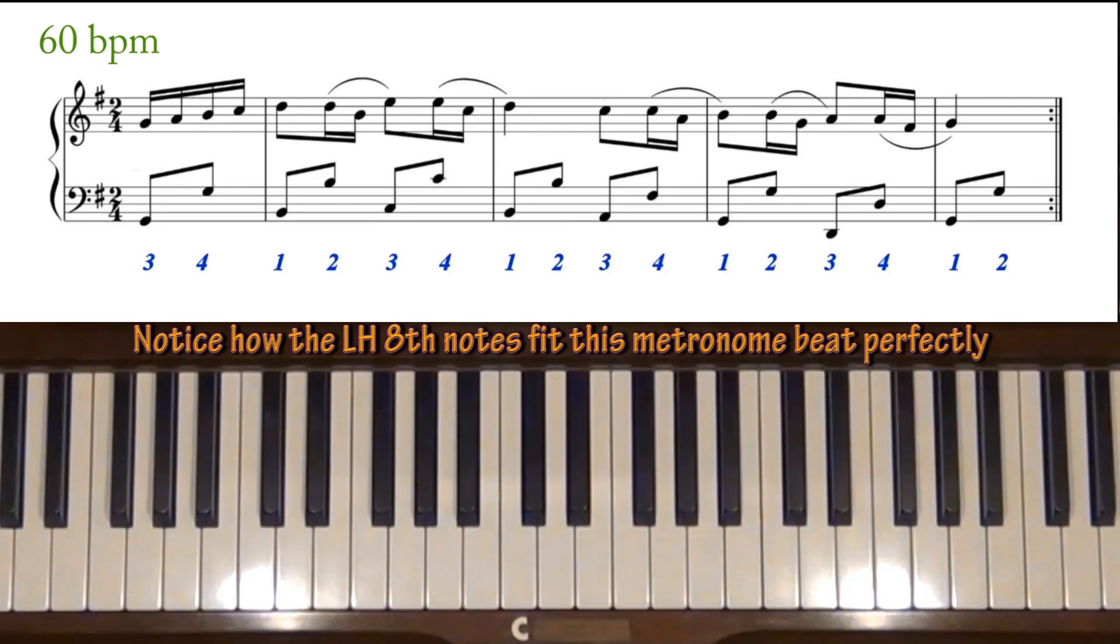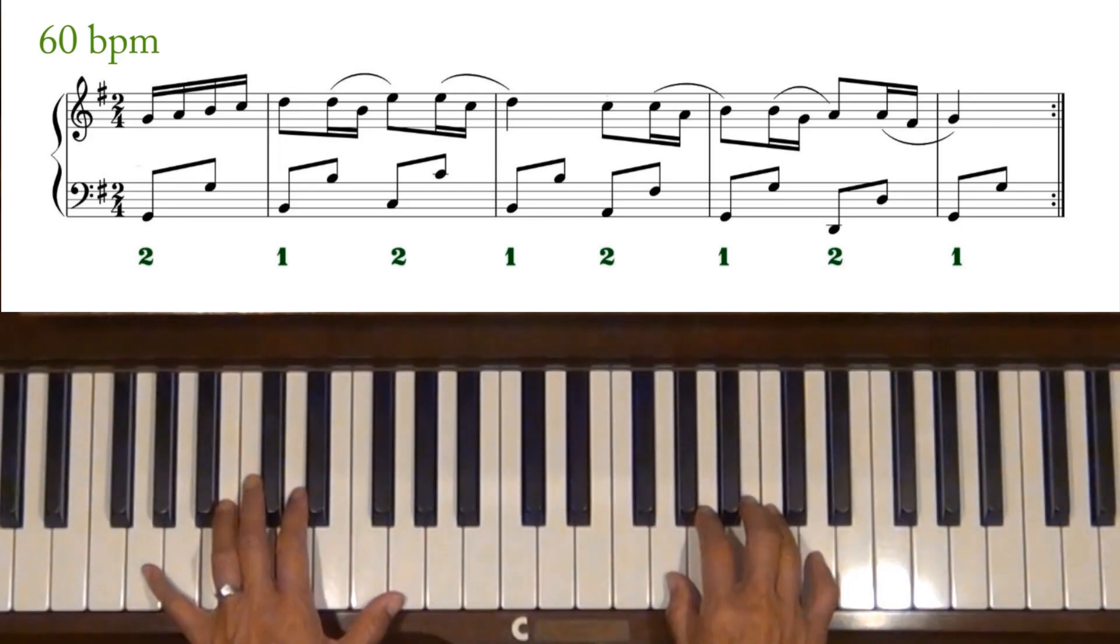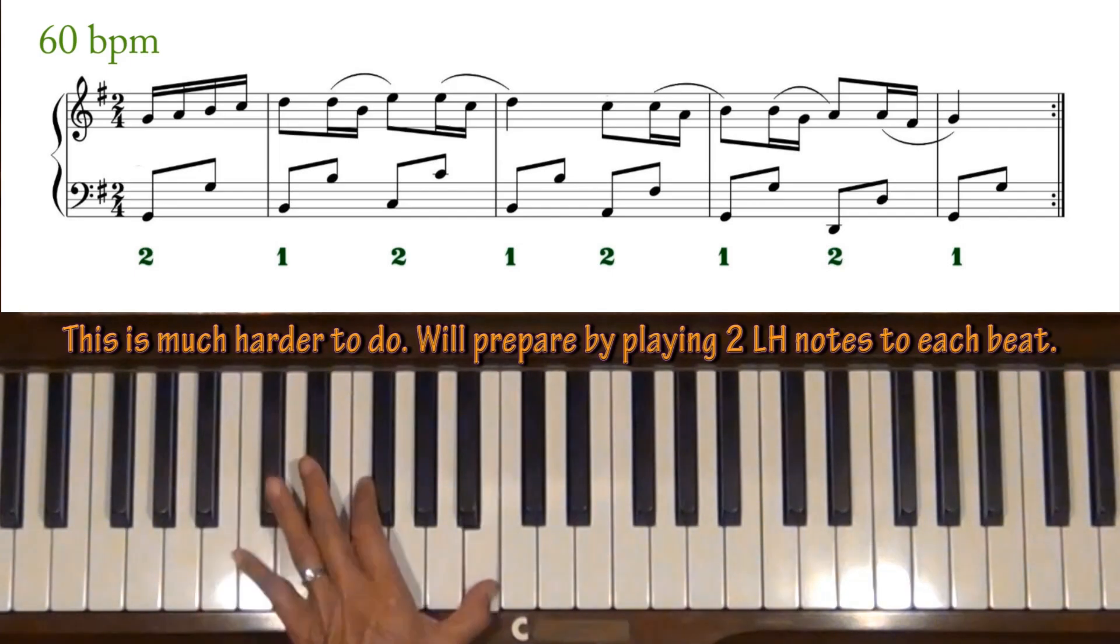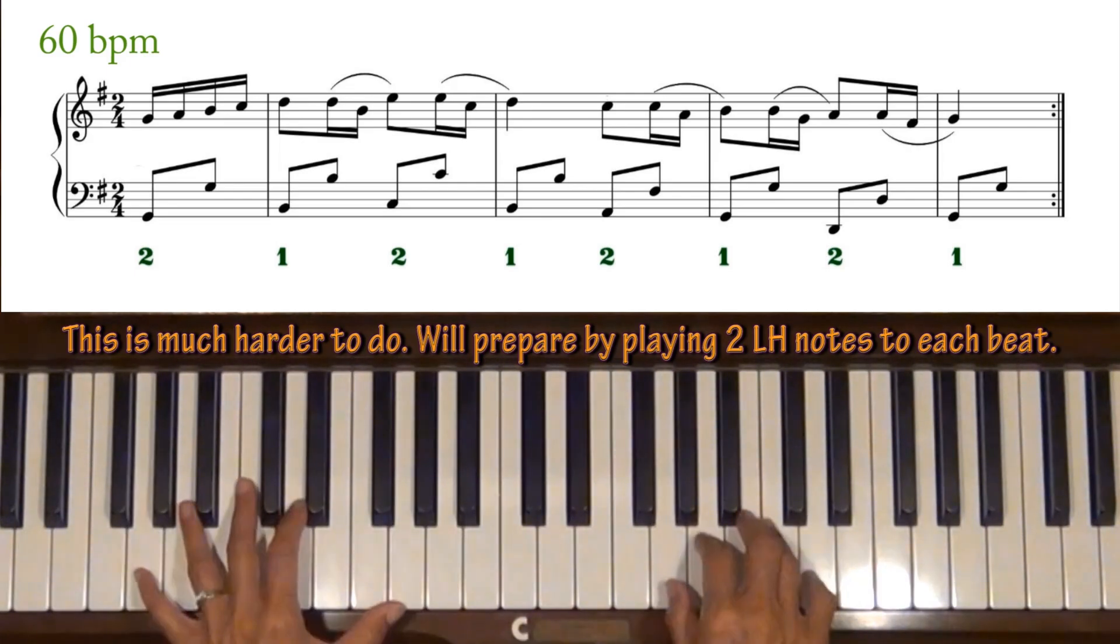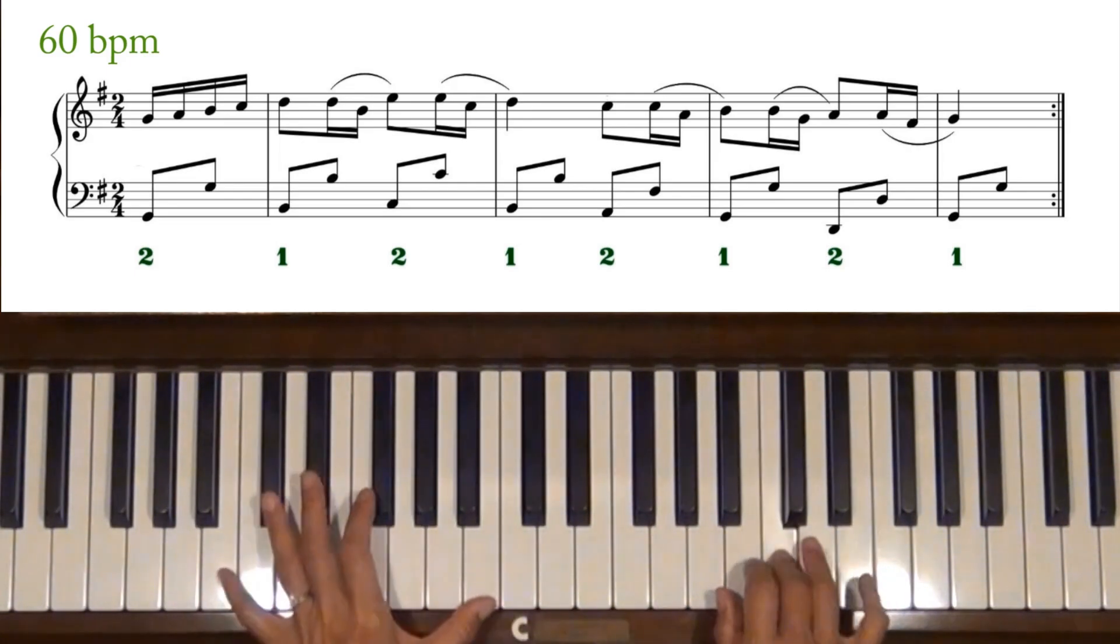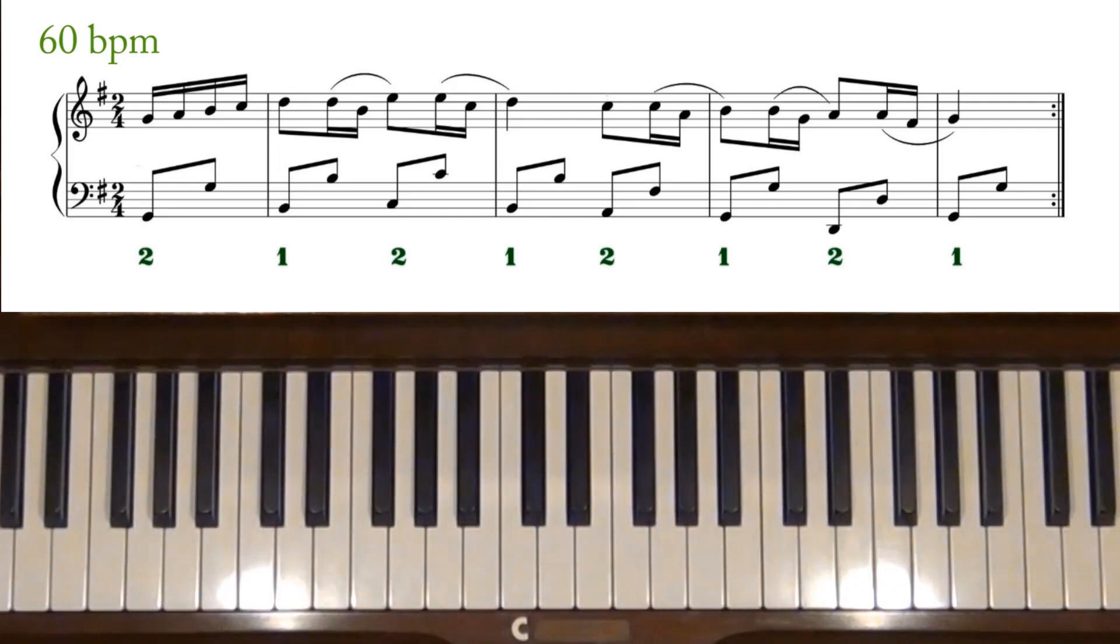That went pretty well, right? So can we have the metronome beat every four ticks? Now I'm going to keep it on 60, but try to fit four notes in there. That shows you it's actually harder to count fewer beats. So that's why it's good to practice by using the smallest note.